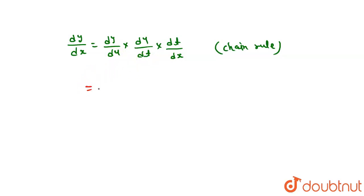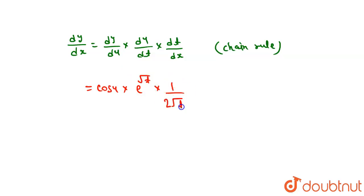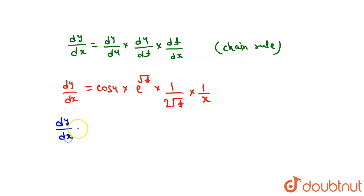So dy upon du is cos u, into du upon dt that is e to the power under root t into 1 upon 2 under root t, into dt upon dx which is 1 upon x. And this is dy upon dx. Now in the next step we can write dy upon dx is equal to cos u.